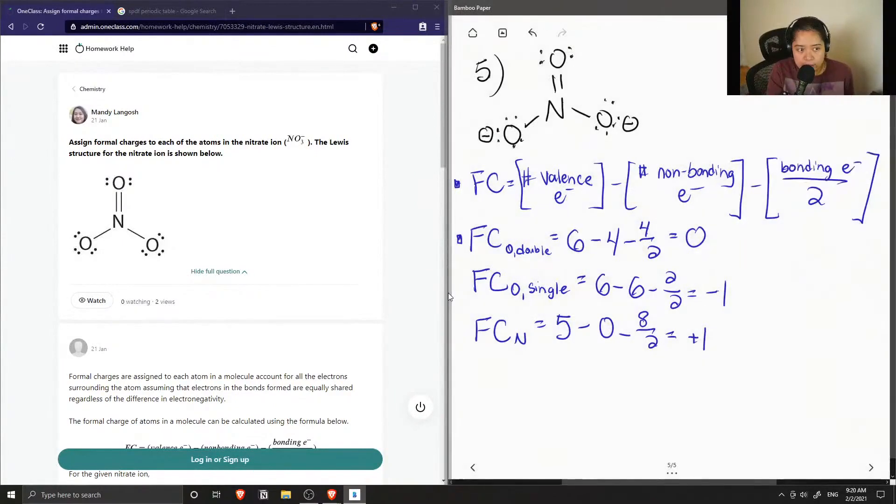So our nitrogen will have positive charge, which gives us our overall negative one charge in the compound. Since we have two negative charges and a positive charge, if we were to add the sum of these formal charges, this gives us the overall charge of the ion, which is negative one.